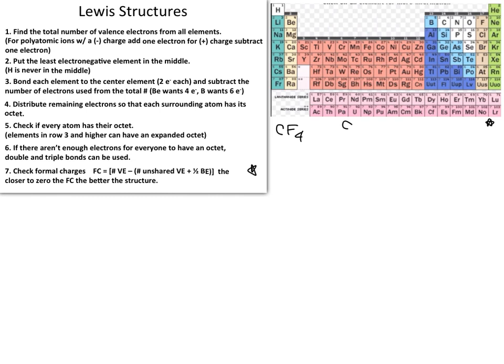Carbon and fluorine are the two elements that make up this molecule. To figure out the valence electrons, we look at our periodic table for each individual atom. Carbon is number six on the periodic table. To figure out how many valence electrons carbon has, you need to look at the previous noble gas — in this case, helium.